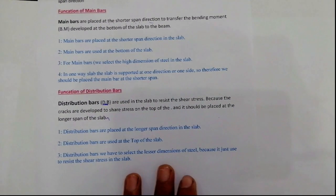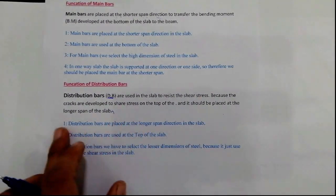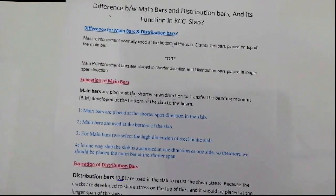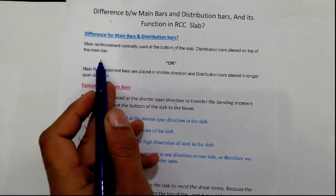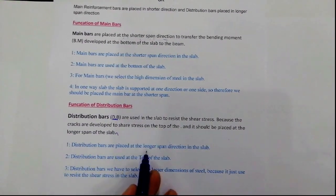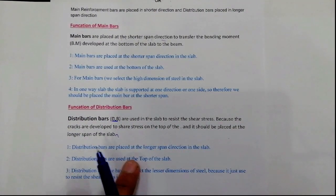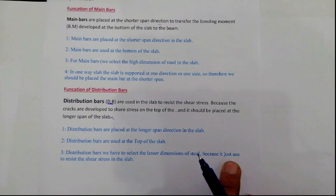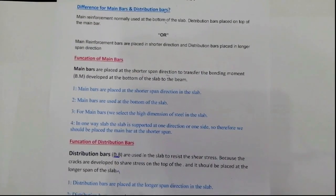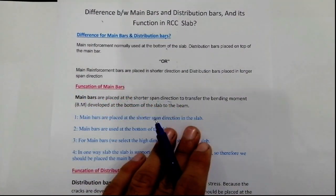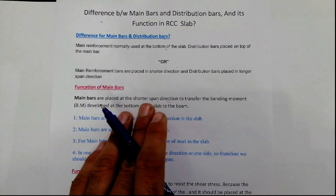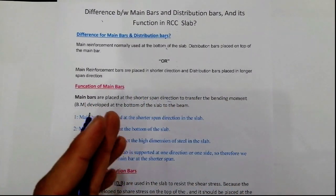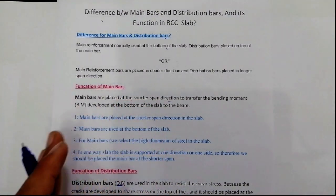Remember: the distribution bar diameter should be less than the main bar. Here are the points about the function of distribution bars: distribution bars are placed at the longer span direction in the slab. Distribution bars are placed on the top of the main bar. We select a lesser dimension of steel for distribution bars because they are used just to resist the shear stresses, while main bars use a higher diameter to resist the bending moment.